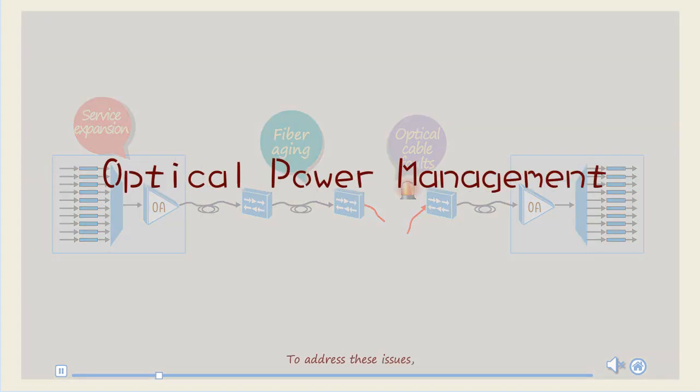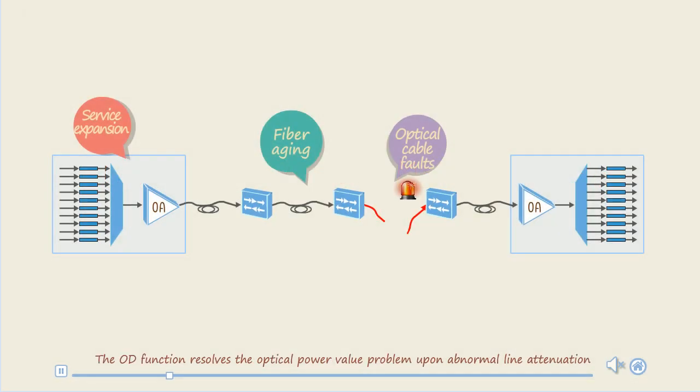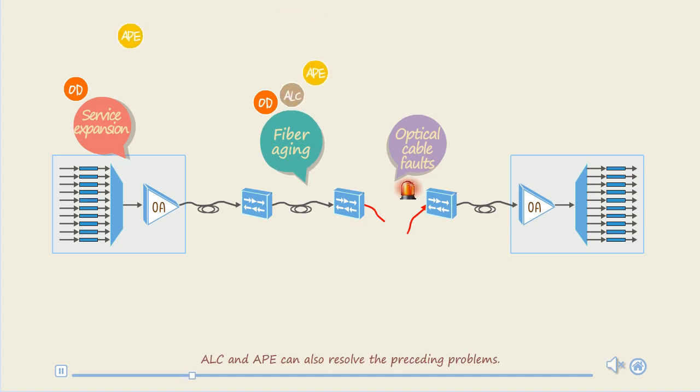To address these issues, the system provides a series of optical power management functions. The OD function resolves the optical power value upon abnormal line attenuation and the optical power flatness problem. ALC and APE can also resolve the preceding problems.